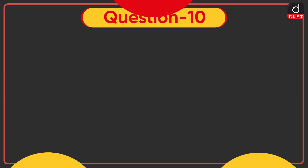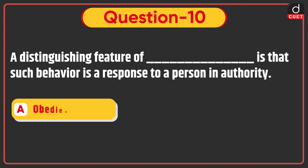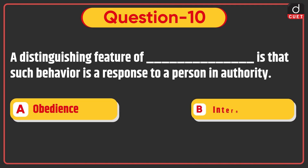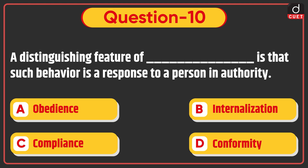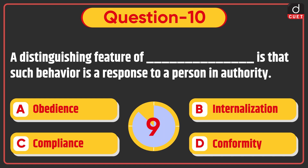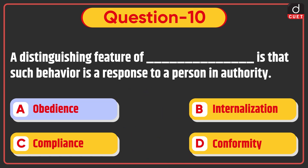Last question: A distinguishing feature of this behaviour is that it is a response to a person in authority. — Obedience, Internalization, Compliance, or Conformity? The correct answer is Option A, Obedience.